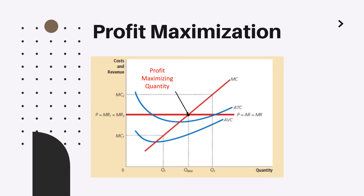The profit maximization strategy is to sell at the point where the company's marginal cost equals marginal revenue, which is equal to the price of the product. If the company is selling at quantity Q1 where marginal costs are lower than marginal revenue, the company can increase its profit by selling one more additional unit, leading the company to increase the quantity sold.